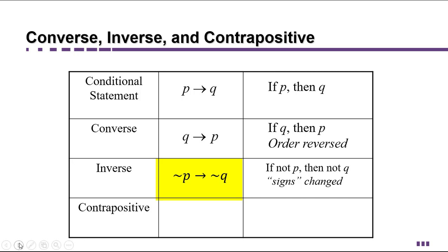but I like to think of it as the signs have changed, right? Because it's a negation so you can kind of think of it like algebra, it's a sign. So if not P then not Q is the inverse.